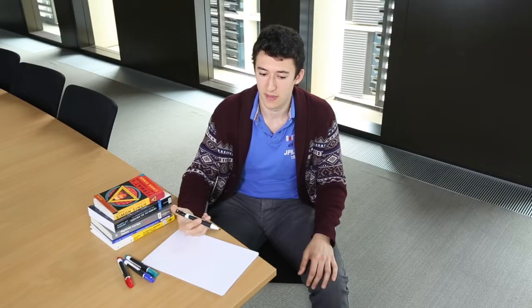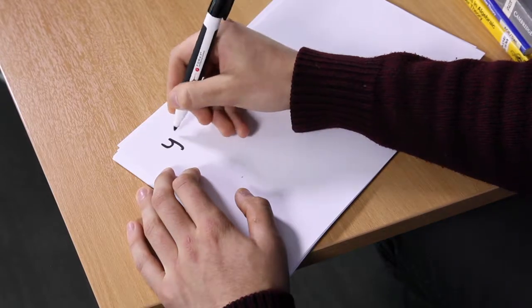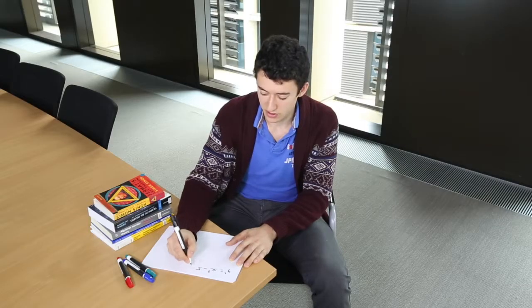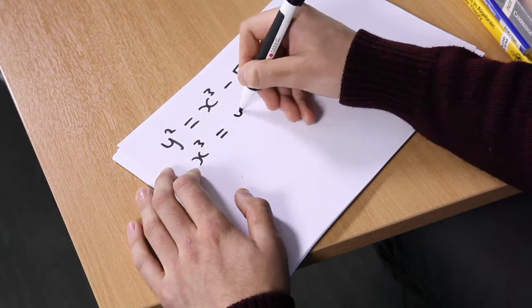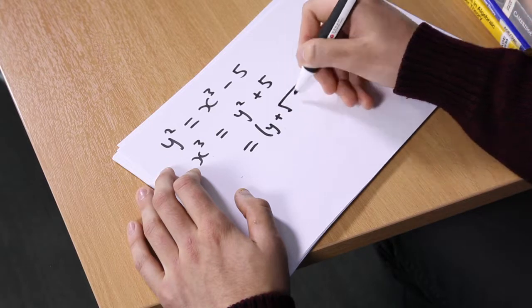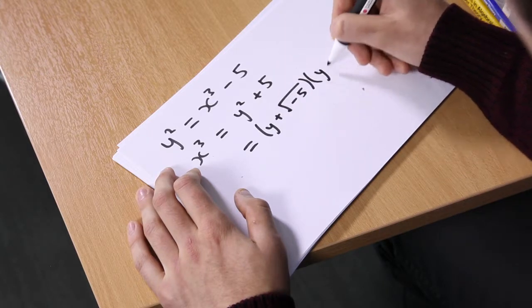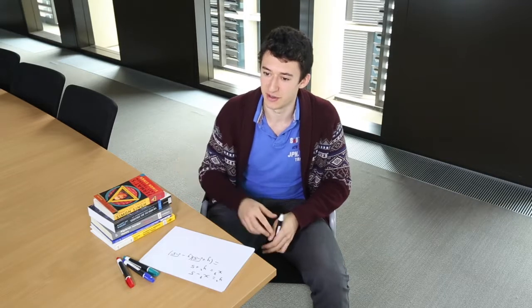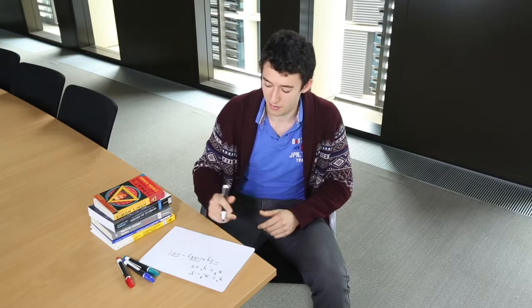To give you an idea of this theme of abstraction, if we look at this equation y squared equals x cubed minus five and write it like that, and then we move into the complex numbers and add in a number which is the square root of minus one, that's called imaginary because it doesn't exist in the real world but it does on paper.